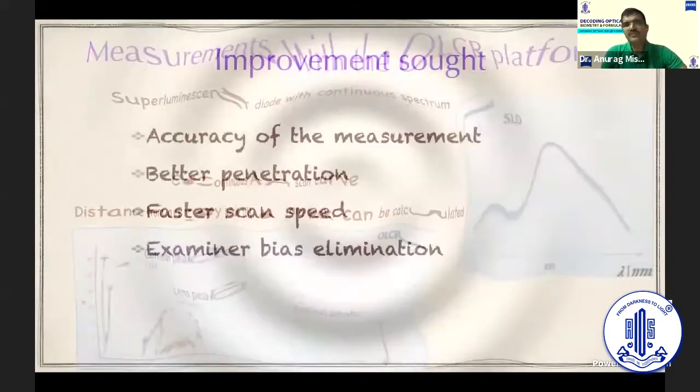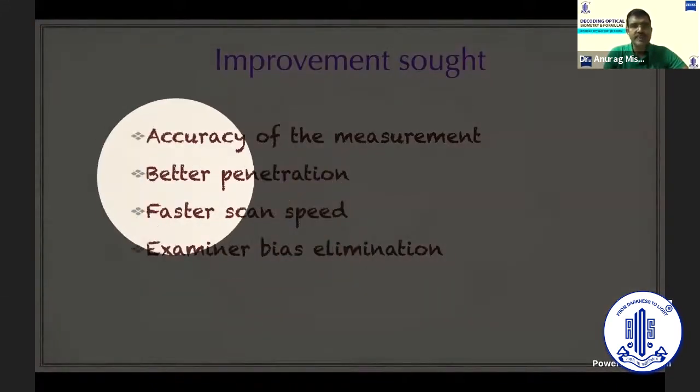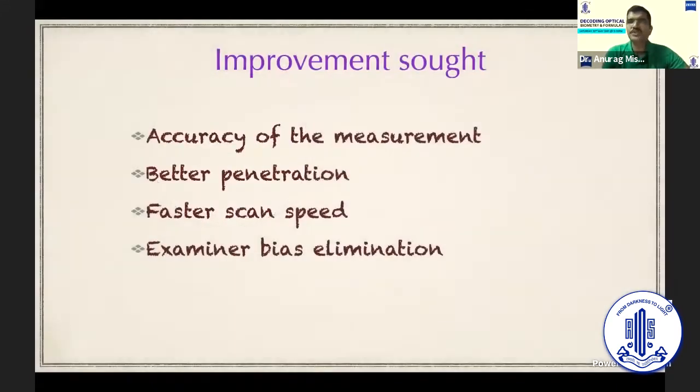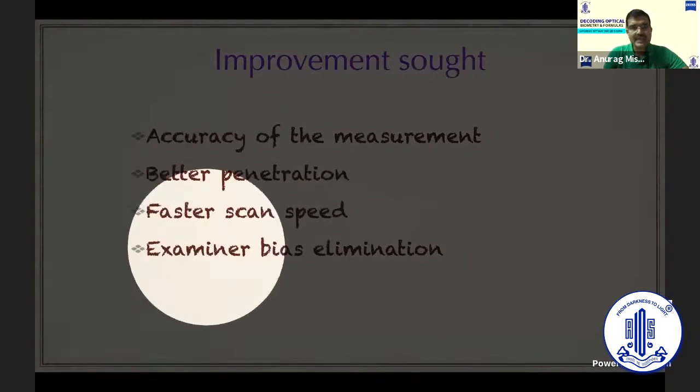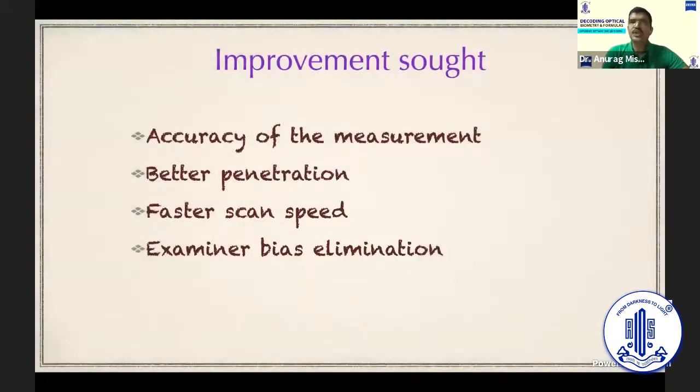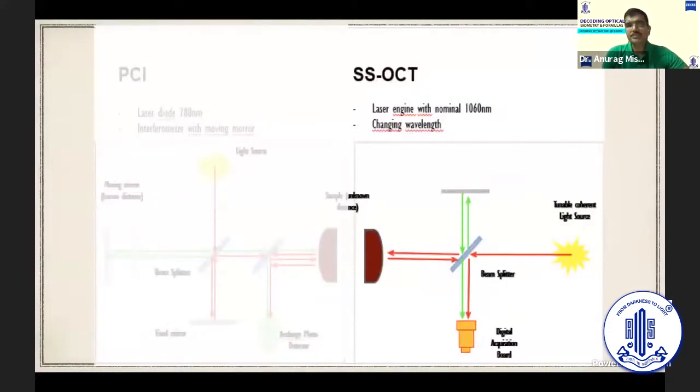However, both of these concepts had some fallacies. We wanted to improve on the accuracy. We wanted the penetration to be better because both of these machines failed when the cataract was more in density. And we also wanted a faster scan speed and an examiner bias elimination. To achieve all that came in this swept-source OCT.